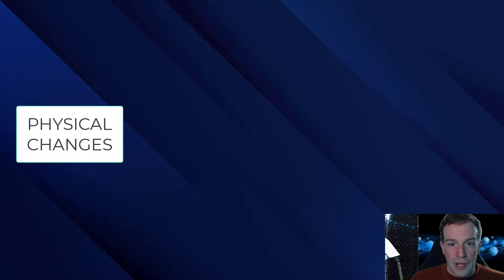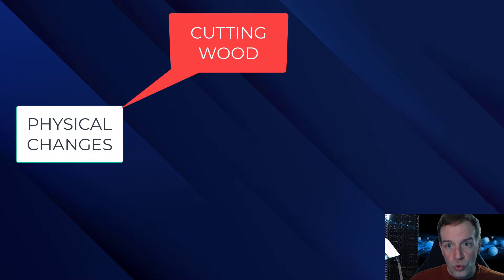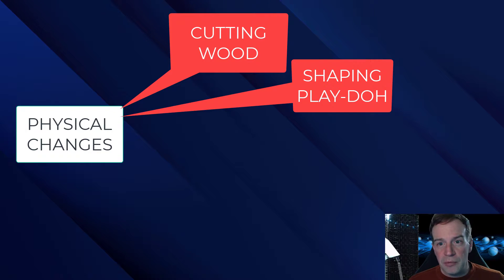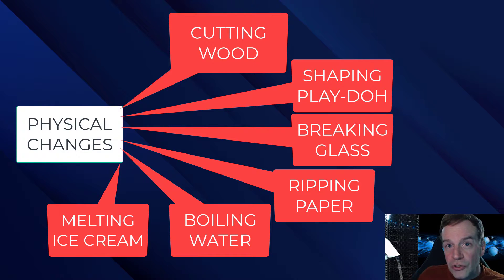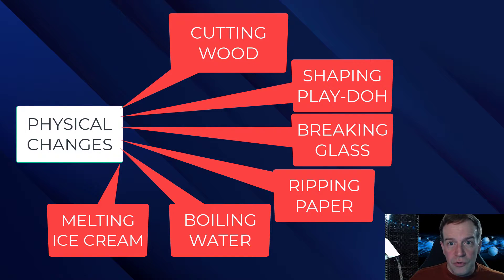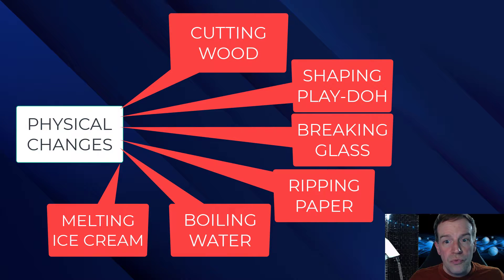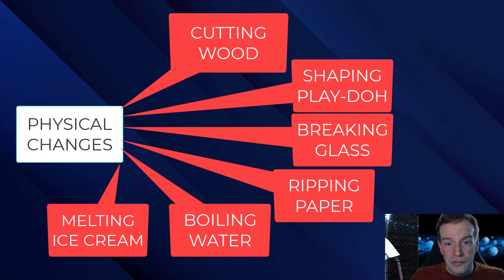Let's look at some examples: cutting wood, shaping play-doh, breaking glass, ripping paper, boiling water, melting ice cream — with all these, it's the same stuff before and after. If you cut wood, it's just a smaller piece of wood. You break glass, it's just now broken pieces of glass.